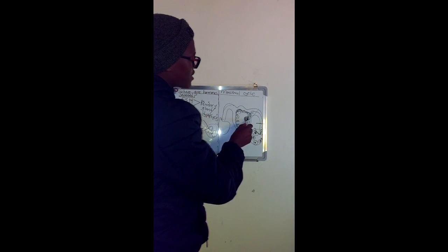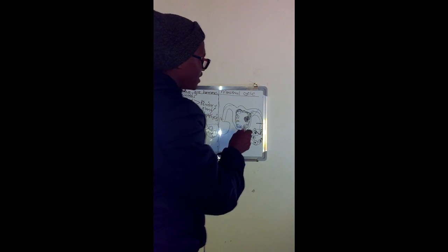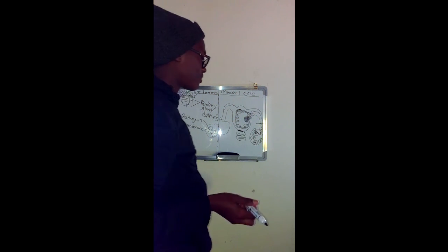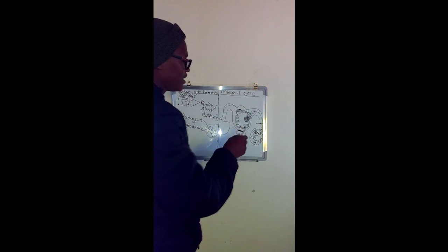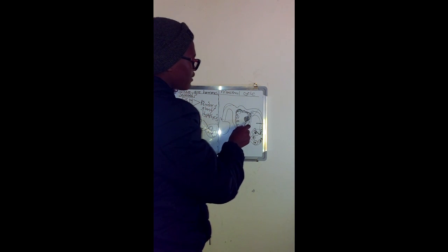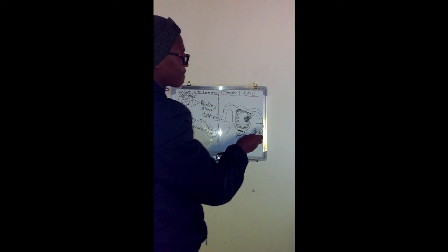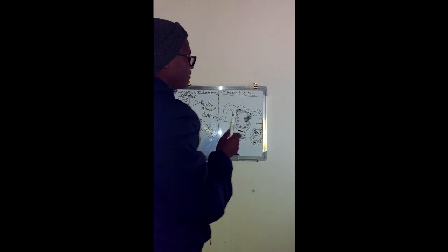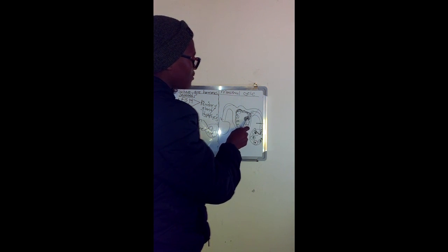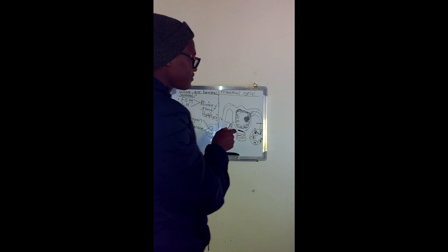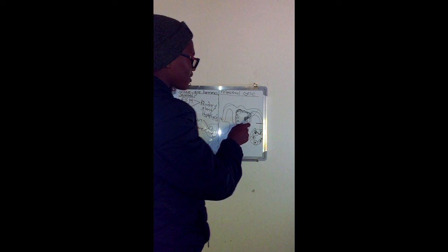This attachment of the fertilized egg into the uterine wall or into the endometrium is called implantation. This implantation, for your own information, takes place after seven days of fertilization in the outer third of the fallopian tube. After seven days, once it implants, the patient is pregnant.